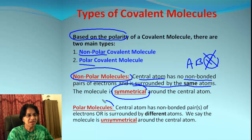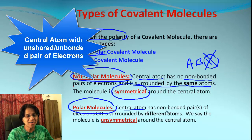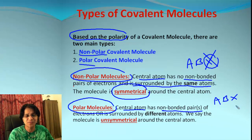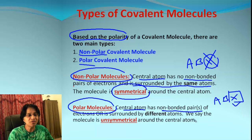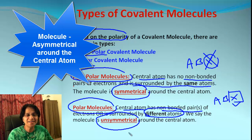Let's find out how a polar molecule could be identified. In this case, the central atom will have a non-bonded pair of electrons. So in the ABX formula, we will have some value for X — this will always exist. Also, the central atom could be surrounded by different atoms, and that makes the molecule unsymmetrical around the central atom.